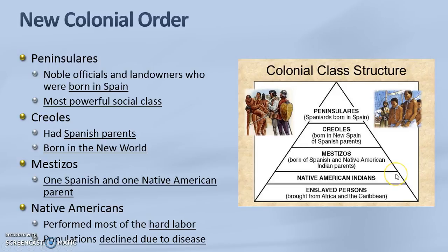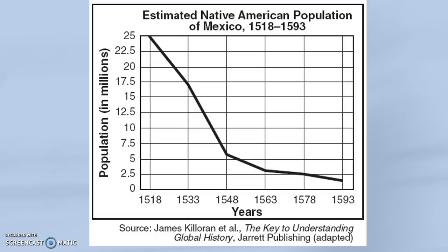Native Americans died due to diseases and harsh conditions. Looking at a chart to get an idea of how many Native Americans died as a result of Spanish colonization: it is estimated that before the Spanish arrived the Native American population in Mexico alone was about 25 million. By the time the conquest had taken place — a period of only about 75 years — the population had been decreased to less than 2 million Native Americans.